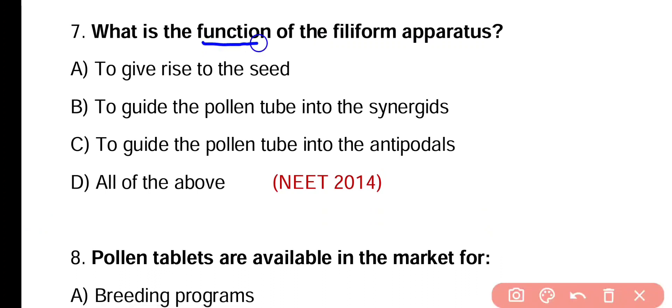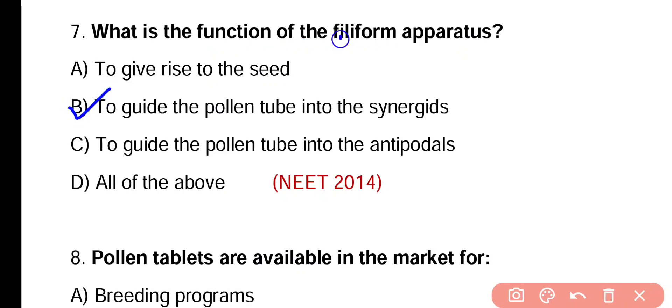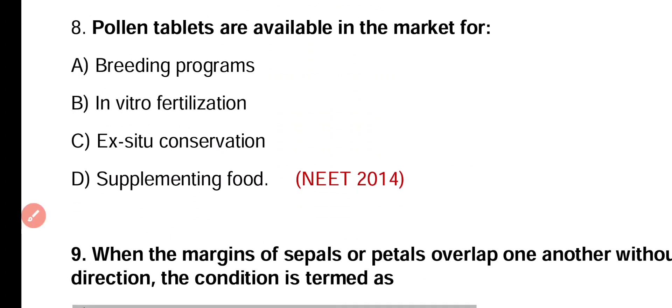Question number seven. What is the function of filiform apparatus? To give rise to the seed, to guide the pollen tube into synergids, to guide the pollen tube into antipodals, or all of the above? Correct answer is option B. Filiform apparatus is present in synergid cells of the egg apparatus and guides the pollen tube into synergids.